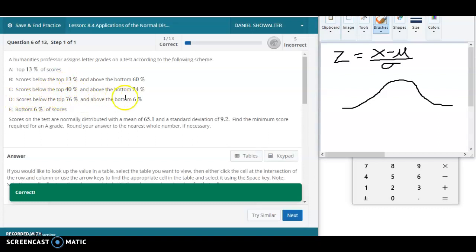Let's take a D for example. So in this class we know the distribution of scores. We're assuming they're normally distributed and we say that scores below the top 76% and above the bottom 6% get a D. But what are those actual values?